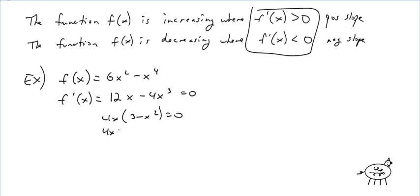So, 4x equals 0. And x squared equals 3. So, x is 0. And x is plus or minus root 3. Right? These are candidates. Okay, so we're going to do interval testing here.